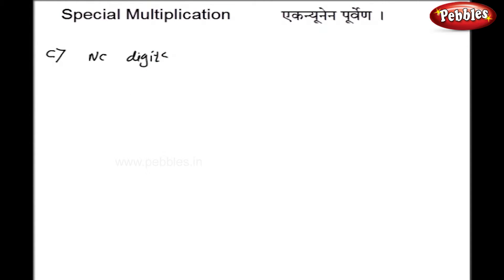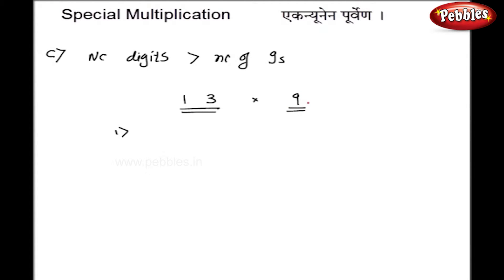Now we are going to see another case where the number of digits are greater than the number of 9s in the multiplier. This multiplication is slightly different from the previous ones. Suppose I have 13 multiplied by 9. Here I have only 1 digit in the multiplier and 2 digits in 13. I will split 13 so that the right hand side has the same number of digits as in the multiplier — so 1 and 3, with only 1 digit on the right hand side.